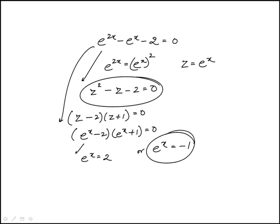Now, e to the x is always going to be positive. It can't be negative, so no solution here. And the other one gives us the solution x equals natural log of 2. And that is ln 2 only, which is answer choice B.